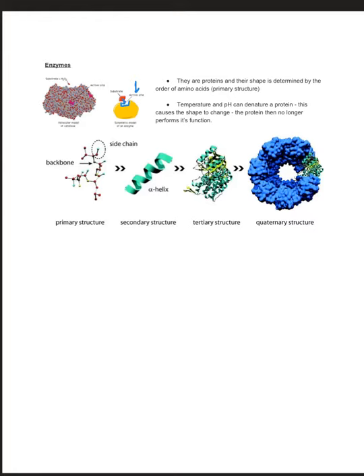The induced fit model basically says as the substrate gets closer to the active site, the active site's shape shifts to allow the substrate and the enzyme to bind. And again, that shape of that enzyme is ultimately determined by the primary structure of the protein because they are proteins.